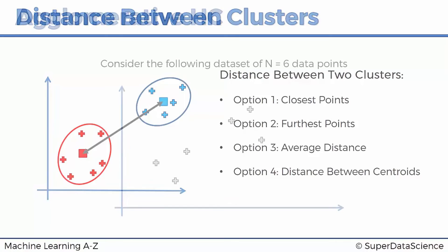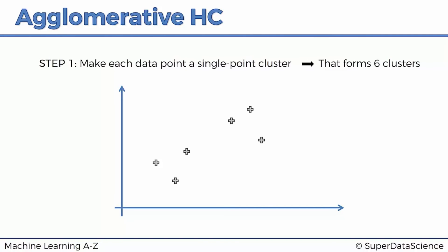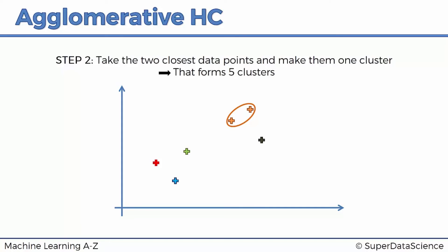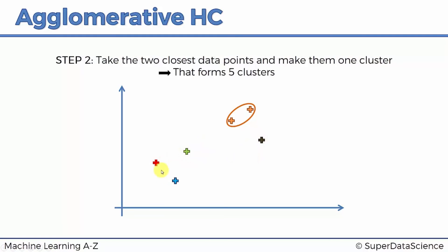Now let's walk through an example. Step one: make each data point a single-point cluster — we have six clusters. Step two: the two closest data points are combined into one cluster — now we have five clusters. Step three: measuring distances between clusters (using minimum distance in this example), the two closest clusters are identified and combined — now four clusters.